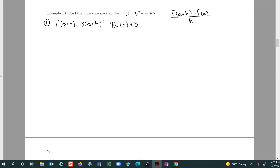Simplify it, get rid of the parentheses, combine like terms. So a plus h squared, you got to write it down twice and FOIL. Now the negative seven I'm going to go ahead and distribute.